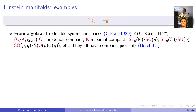An observation due to Borel — non-trivial to prove — is that all these symmetric spaces have compact quotients, meaning there are discrete groups acting by isometries properly discontinuously whose orbit space is compact.